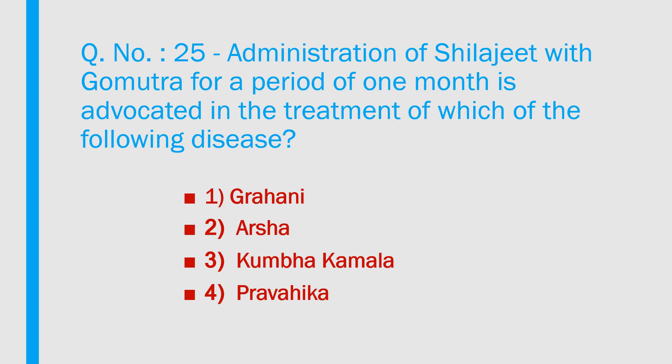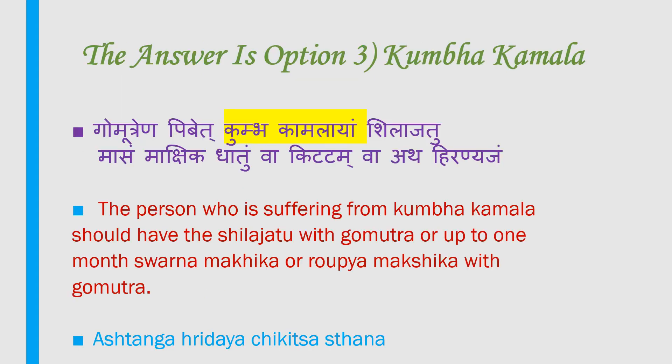Question number 25: Administration of shilajit with gomotra for a period of one month is advocated in the treatment of which disease? 1) Grahani, 2) Arsha, 3) Kumbha kamala, 4) Pravahika. Answer is option 3 — Kumbha kamala. The person suffering from kumbha kamala should take shilajit with gomotra for up to one month, or swarna makshika or raupya makshika with gomotra. Reference: Ashtanga Hridaya, Chikilsa Sthana.